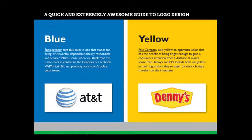Yellow is an optimistic color that has the benefit of being bright enough to grab consumers' attention. It's a high-frequency color which you can see from a long distance. It makes sense that Denny's and McDonald's both use yellow in their logo since they are eager to attract hungry travelers on the interstate. McDonald's didn't use yellow just because they liked it — when you see that M from far away it stands out and starts triggering your taste buds.